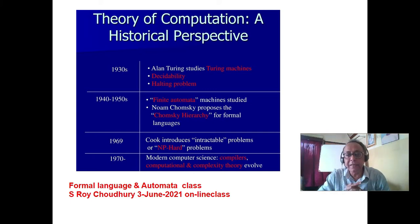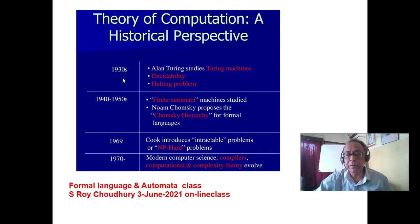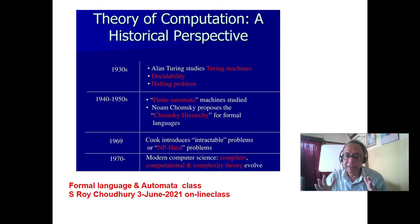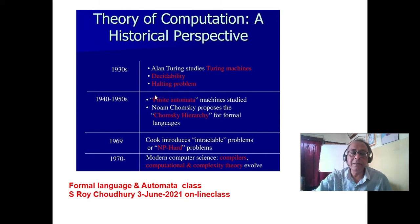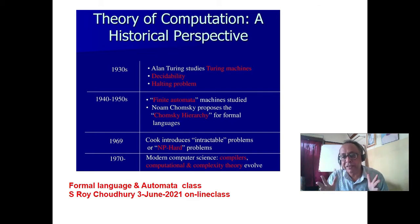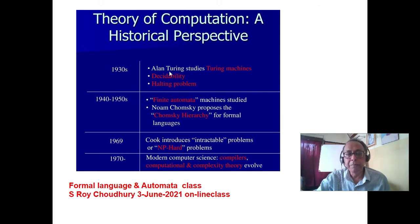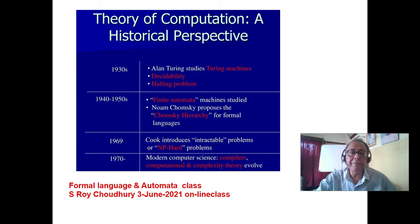If you see the history of computing, around 1936-37 the concept of the Turing machine came from Alan Turing, and that is still the ultimate machine we have until quantum computing exists. Alan Turing developed both the finite state machine and the Turing machine at the same time — nobody else has done that.